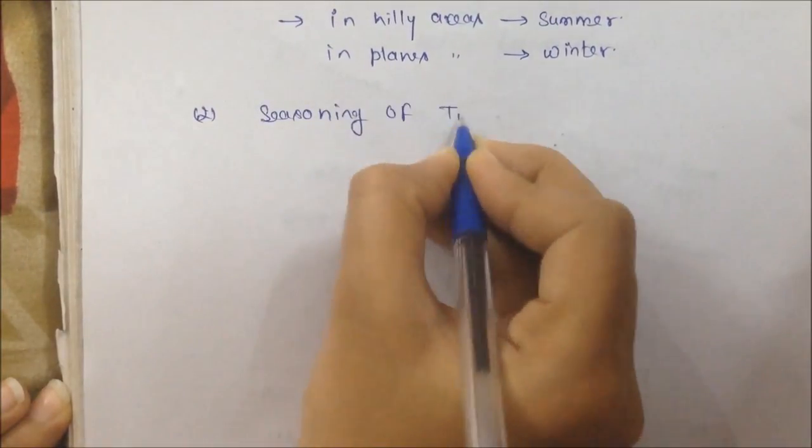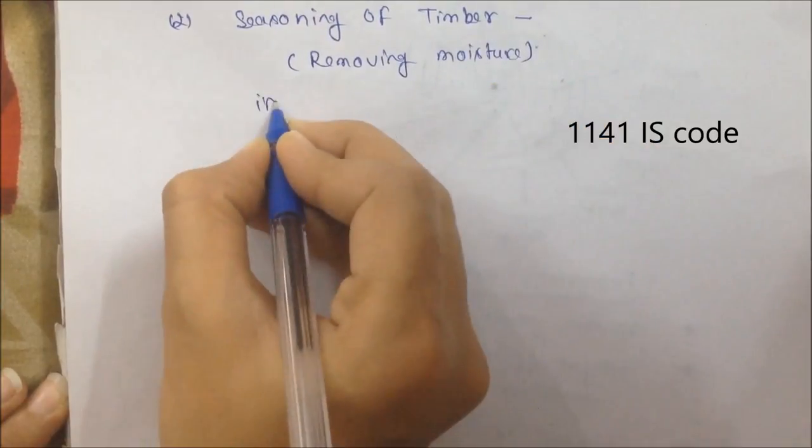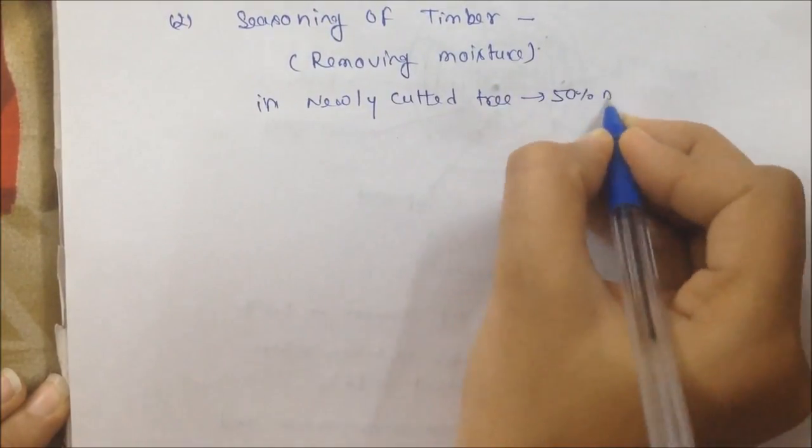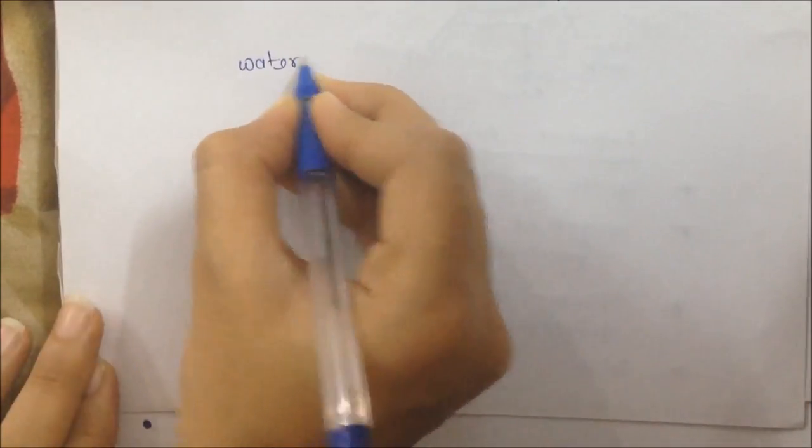Second is seasoning of timber and drying of timber. Its code is IS 1141. And newly cut trees have 50% moisture content. In trees, water is present in two areas.